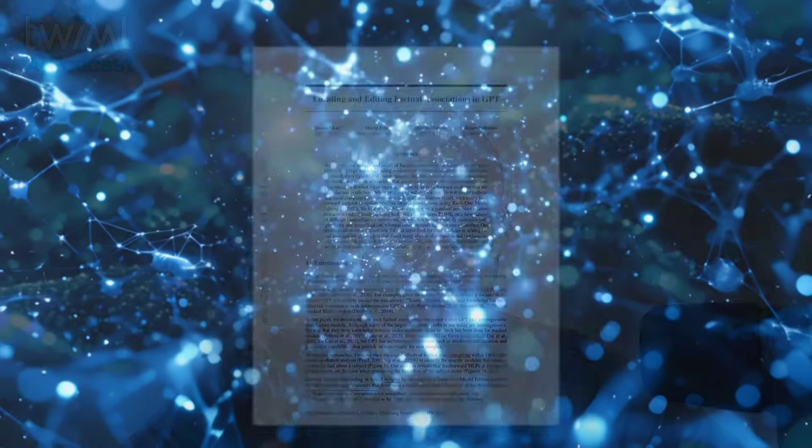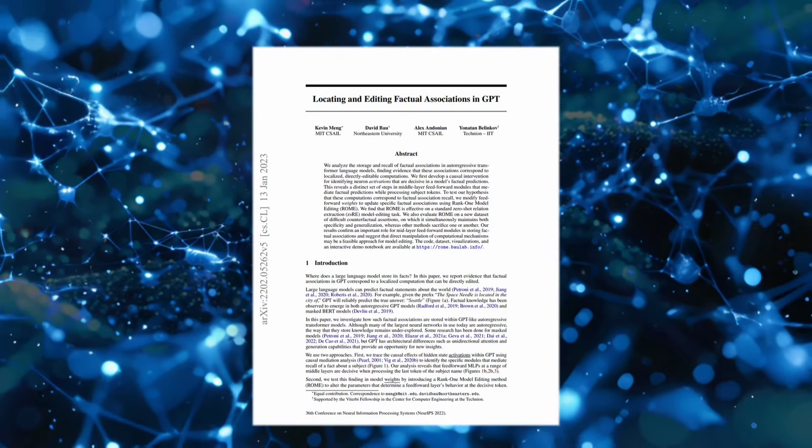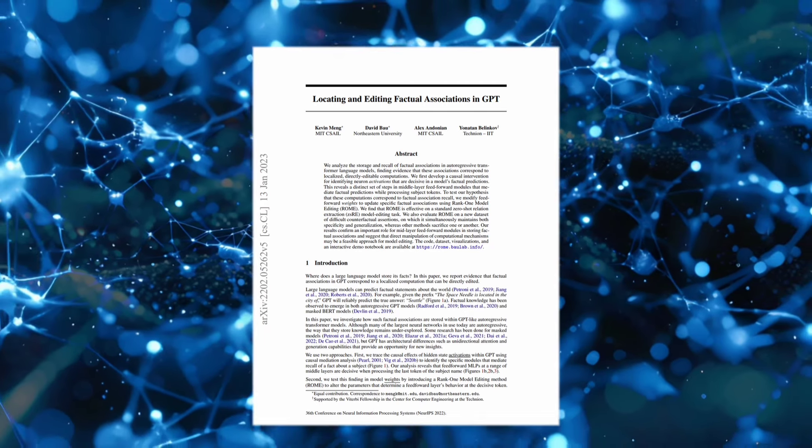Some of the model editing methods work almost exactly the same. A method like MIMIT, used when you want to update multiple facts over time, does low-rank updates to specific matrices in the model — almost exactly the same idea as LoRA. But MIMIT is an approach used more in the context of editing than in efficient tuning. This goes back to a difference in stated goals, when in fact the underlying approaches are quite similar.